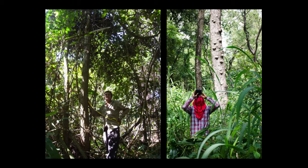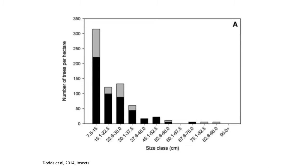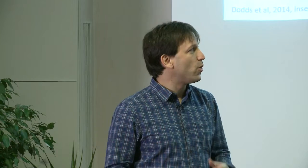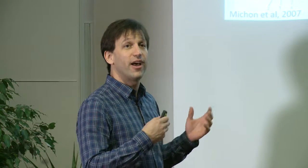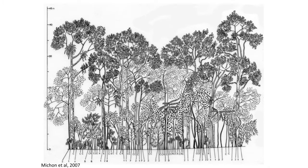Traditionally, we've measured forest structure by getting on the ground and using tape measures or clinometers to measure the size of trees, the heights of trees. We've come up with graphs to understand how these forest structures change across ecosystems. Or if we want more of a gestalt view of the forest, we'll draw forest profile diagrams to understand how forests look. And these are quite valuable to really get a sense of how these forests work.